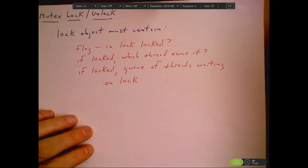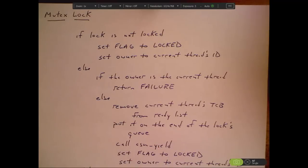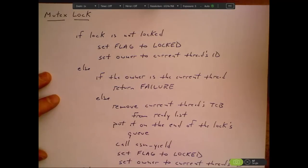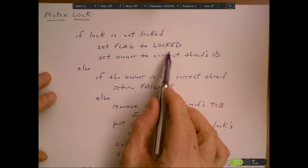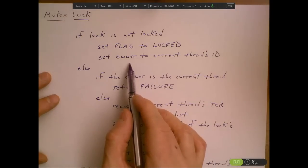Let's write some pseudocode then to actually do the lock operation. So a thread calls lock. The first thing we're going to do is check to see if the lock is locked. If it's not locked, if it's available, then we'll set the flag to say it's locked and record the current thread's ID as the current owner of the lock.